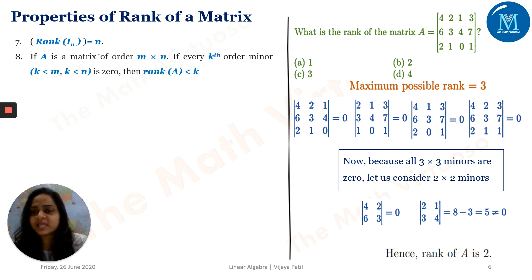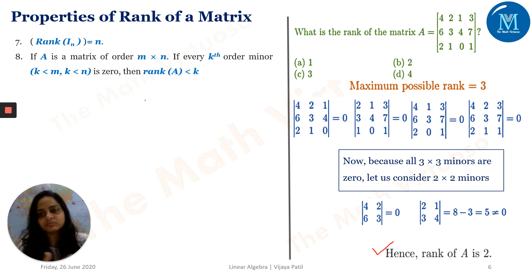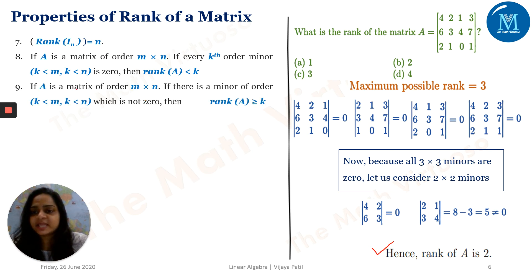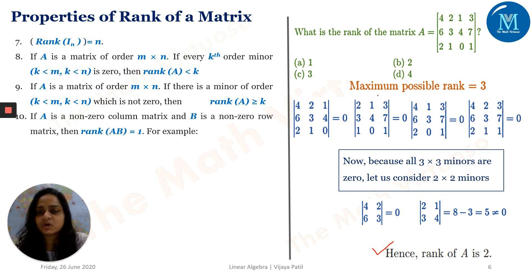If A is a matrix of order m×n, and every k-th order minor (where k < m and k < n) is zero, then rank of A is less than k. Conversely, if there exists a minor of order k that is not zero, then rank of A is greater than or equal to k. You can verify both of these properties using the same 3×4 example.